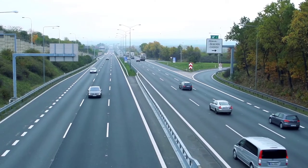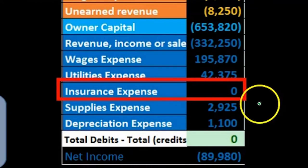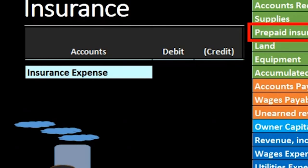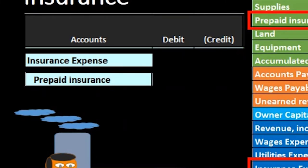We can even know which direction the accounts go just by the fact that insurance expense is an income statement account, and income statement accounts only go one way — they go up. Expenses go up with debits. Therefore, we're going to debit insurance expense. We may not know the amount yet, but we know that's the debit, and therefore prepaid insurance must be the account we will credit. Just by knowing we are recording an adjusting entry, we can do all that work without really knowing why.